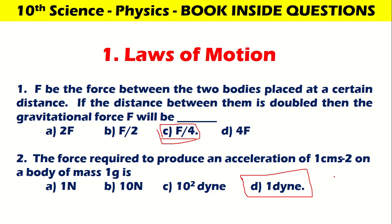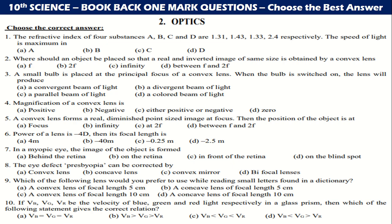1 dyne is the perfect answer. Let us go to the next chapter, that is next unit, Optics. The refractive index of 4 substances A, B, C and D are 1.31, 1.43, 1.33, 1.24 respectively. Where should an object be placed so that a real and inverted image of same size is obtained? This is May 2022, so B, 2F is the correct answer.